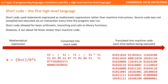Short code is commonly considered to be the first what we call high-level language. It used statements expressed as mathematical expressions rather than machine instructions. Source code was not compiled but instead executed via an interpreter every time the program was run.